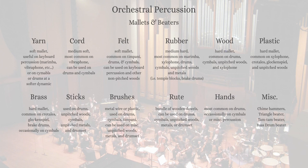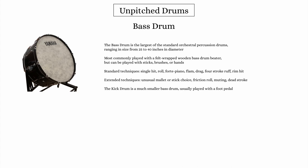The largest of the unpitched drums typically found in the modern orchestra is the bass drum. There are two main types: the concert bass drum, ranging in size from about 25 to 40 inches in diameter — the standard bass drum found in both orchestras and wind ensembles, typically played with sticks or mallets — and the pedal bass drum, found commonly as part of the drum set and occasionally called for in the orchestra. When writing for the concert bass drum, you can ask for large, medium, or small, or simply writing bass drum in your score will work as well.